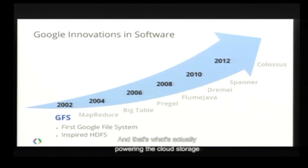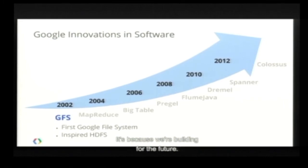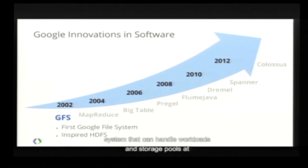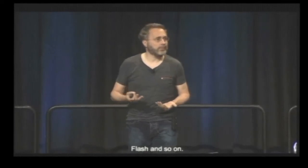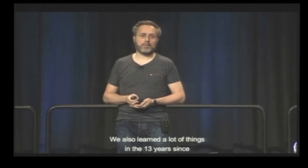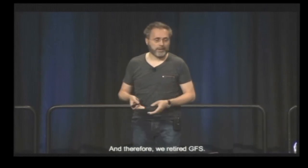Colossus is what's actually powering Cloud Storage today, and pretty much any other storage at Google. Why did we retire one of the world's most successful file systems? Because we're building for the future — we wanted a file system that can handle workloads and storage pools at least 100 times bigger than GFS, with higher availability via multi-master and fully distributed directory, and with Flash support. All the lessons learned over 13 years have flowed into Colossus, and therefore we retired GFS.